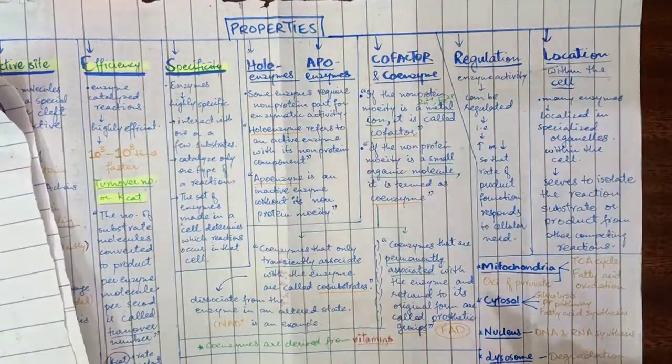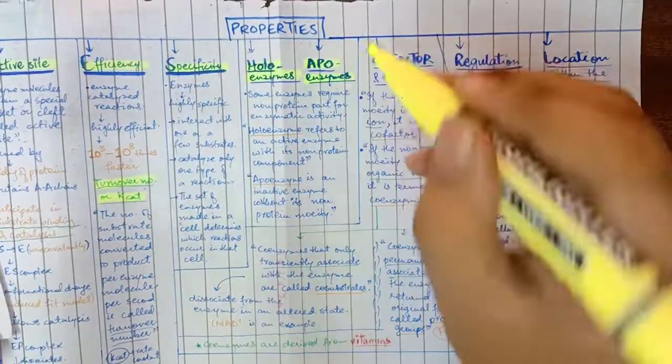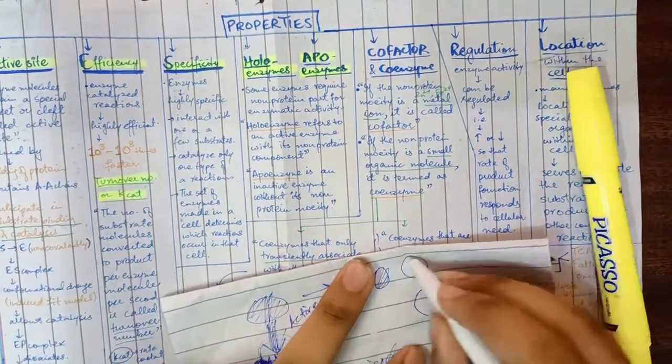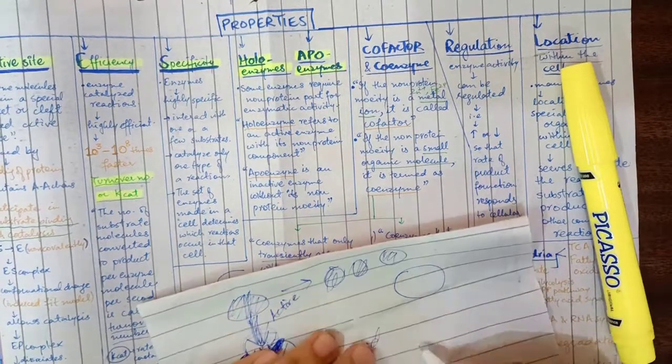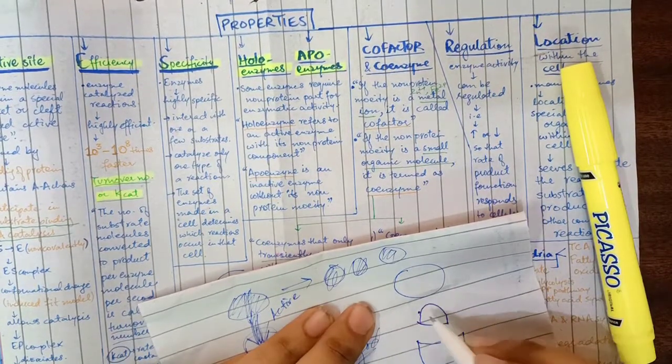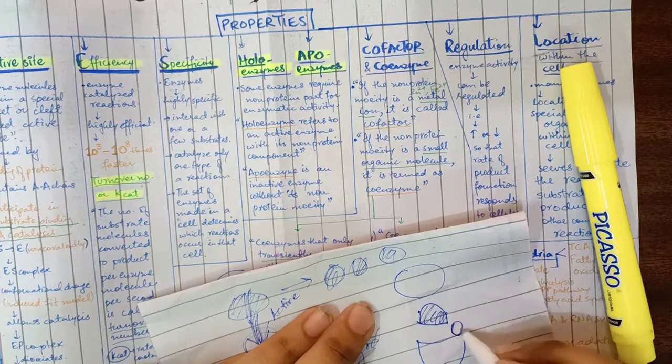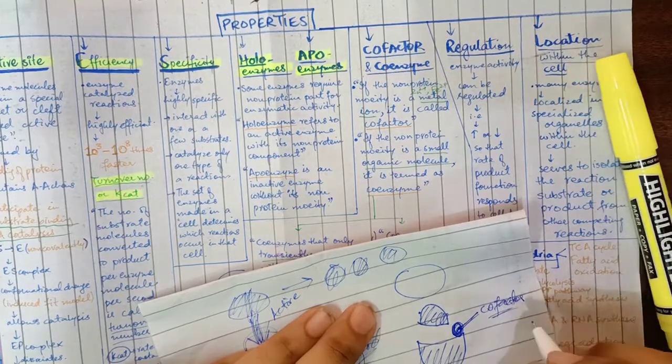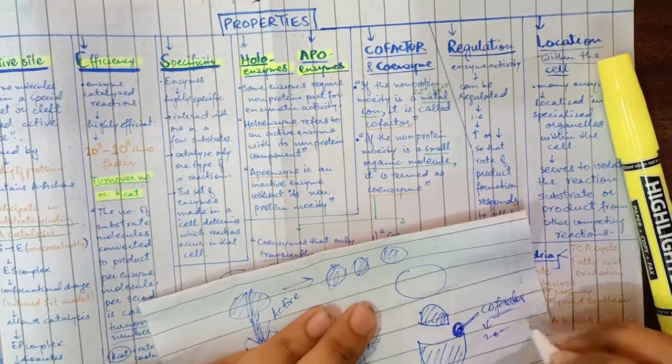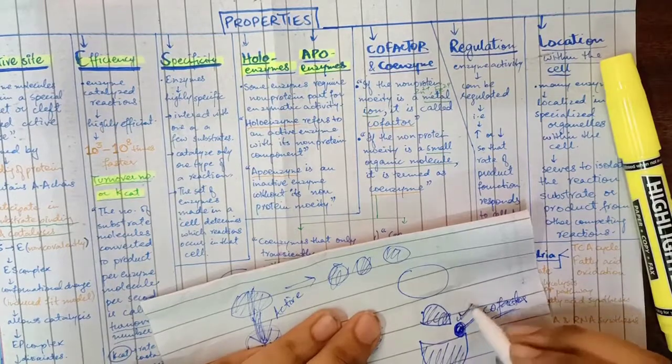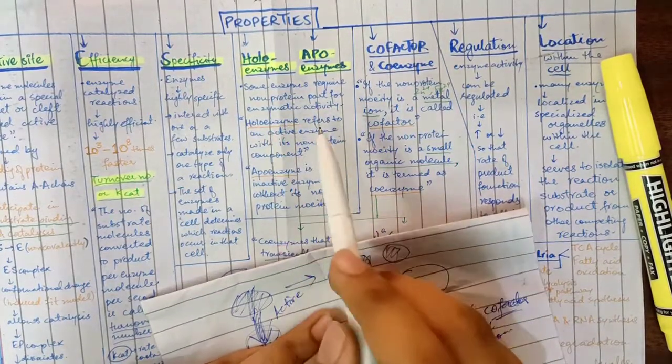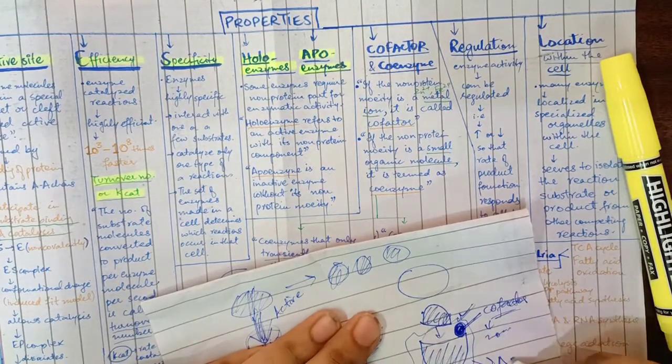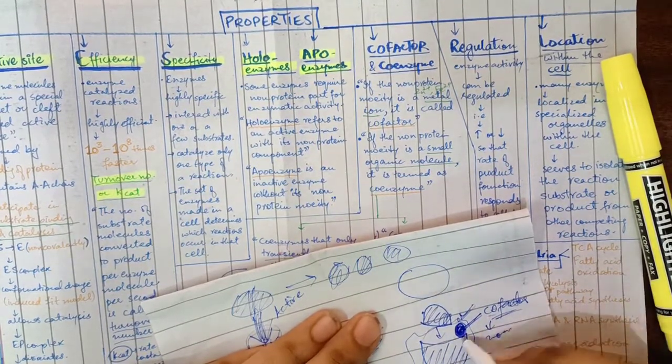Other properties involve holoenzymes and apoenzymes. An enzyme has a substrate, but some enzymes need more than just protein - they need a cofactor. This is a non-protein part. Some enzymes require a non-protein part for enzymatic activity. The holoenzyme is active with its non-protein component.